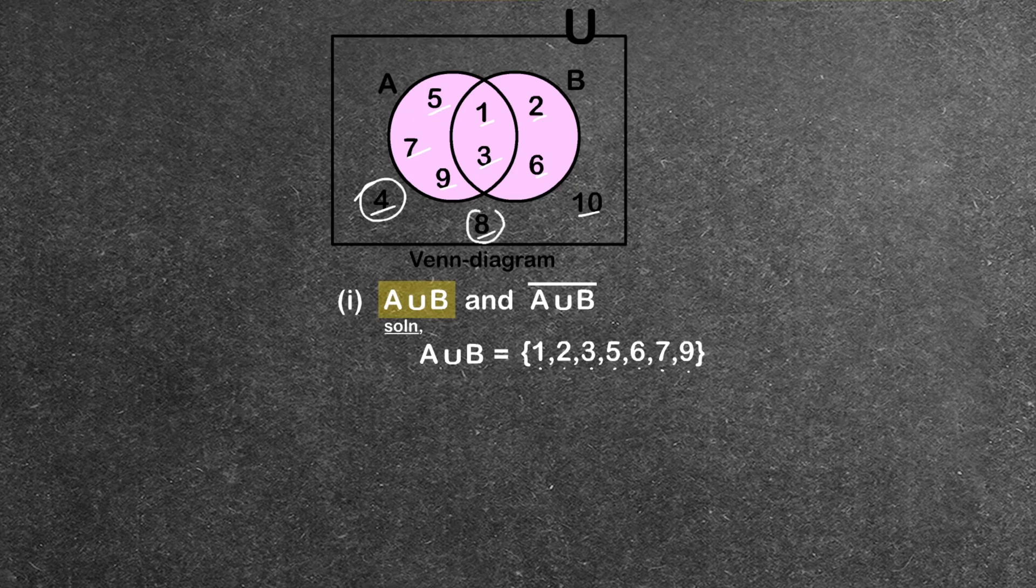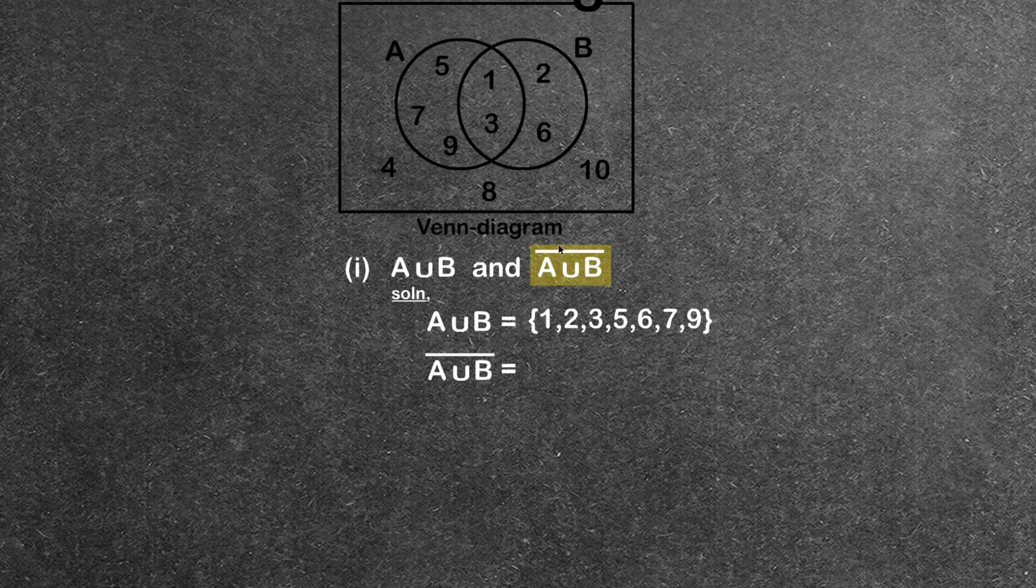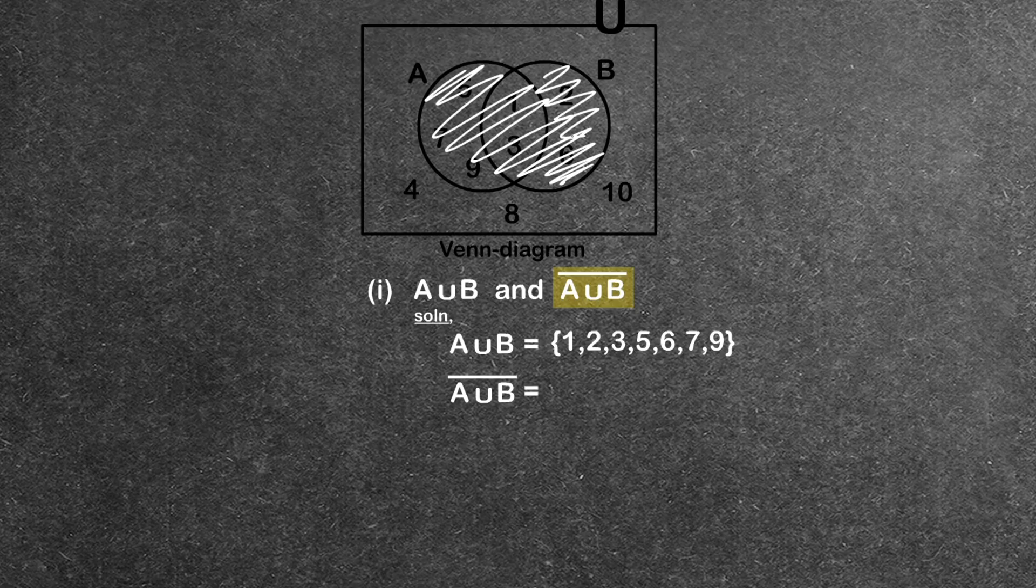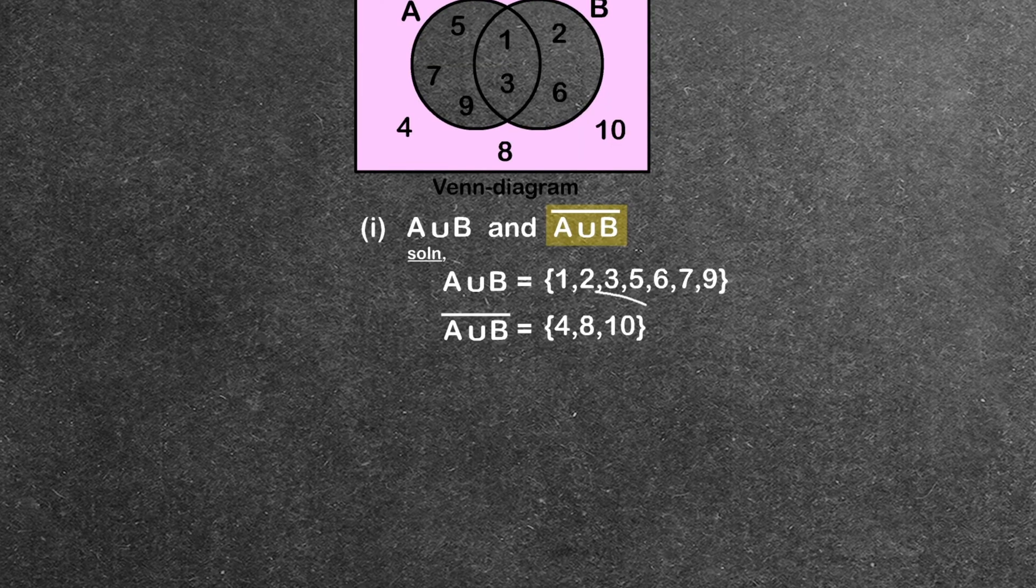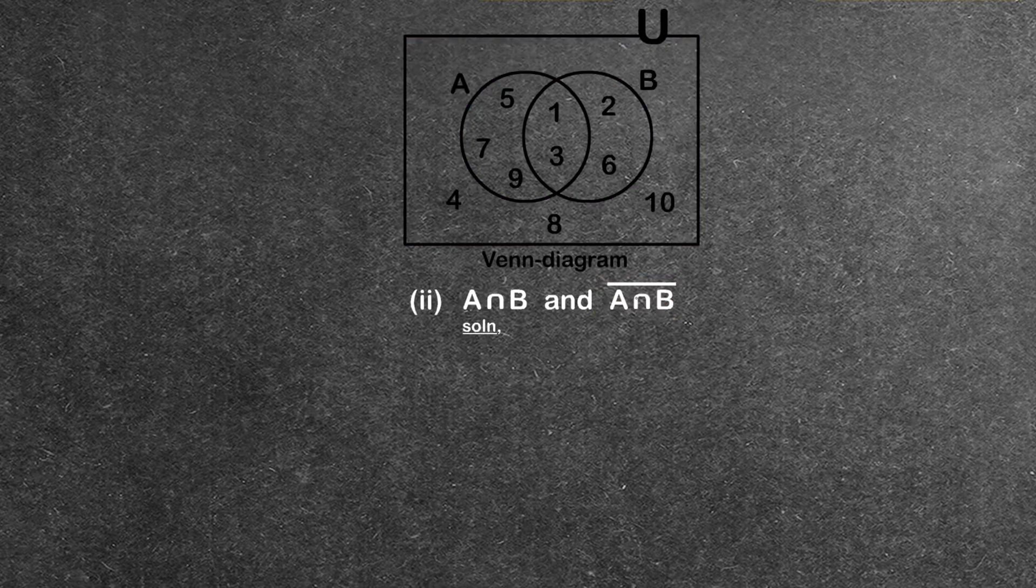Next is (A∪B)', the complement of A union B. The complement means what's outside of A union B in the universe. Looking at the universe, the elements not in A union B are 4 and 10.